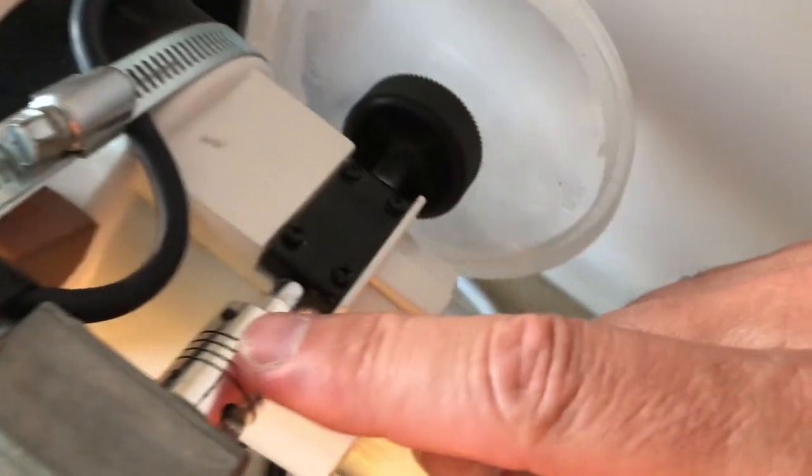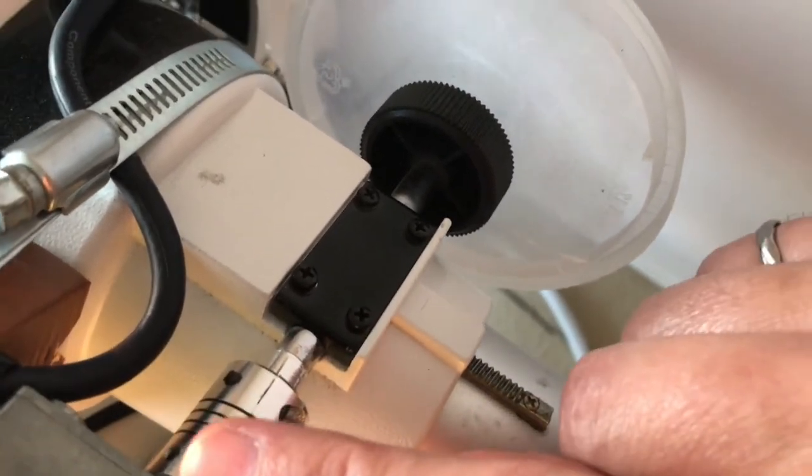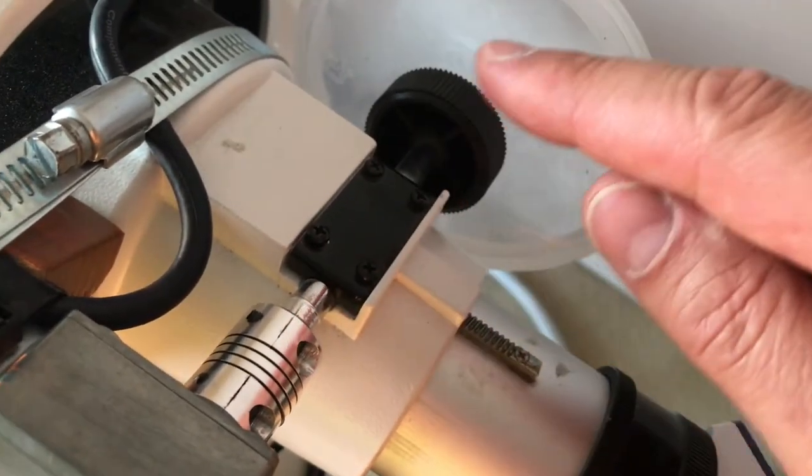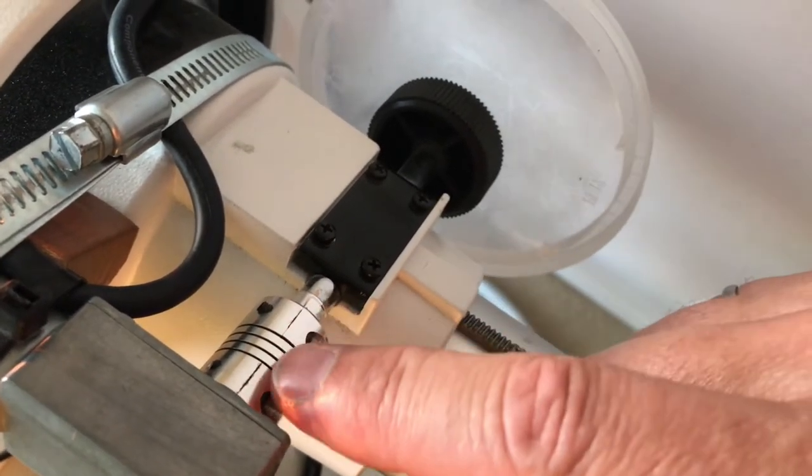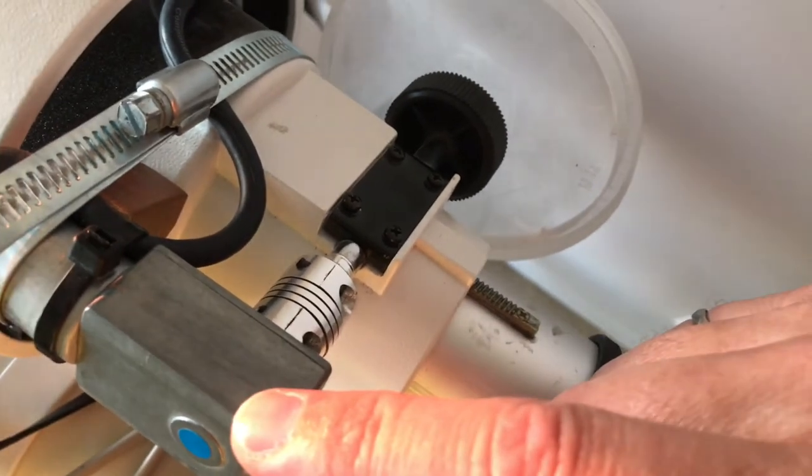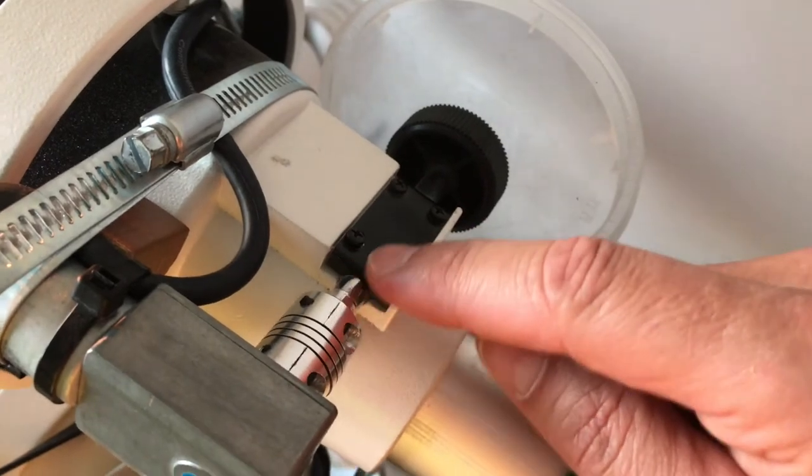There's then a flexible coupling that you order with this diameter on the motor output and it might be a different diameter on the telescope focuser. But that works very well, this allows a little bit of misalignment between the shaft that the motor drives and the shaft of the focuser.